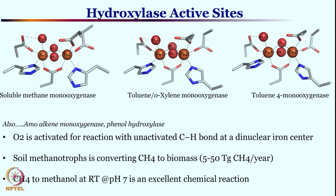What is the source of this diiron center? First of all, we have soil methanotrophs which convert methane to biomass — that is one source of methane monooxygenase. By utilizing such soil methanotrophs, a huge amount of methane is converted to methanol: 5 to 50 Tg of methane per year, which is overall 1 to 10 percent of methane in air converted to methanol. This methane to methanol formation occurs at room temperature under neutral pH conditions — truly one of the best reactions in biological systems or anywhere in synthetic chemistry.